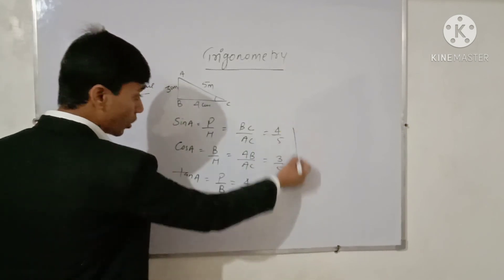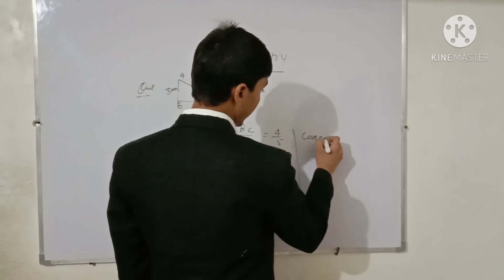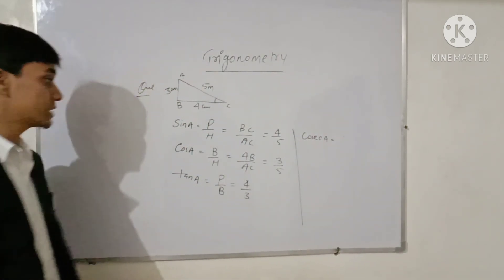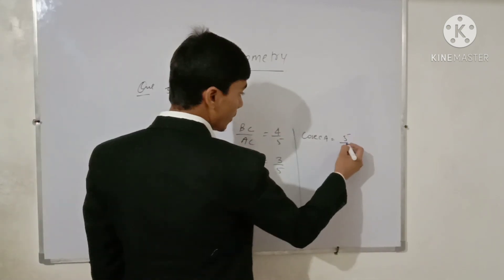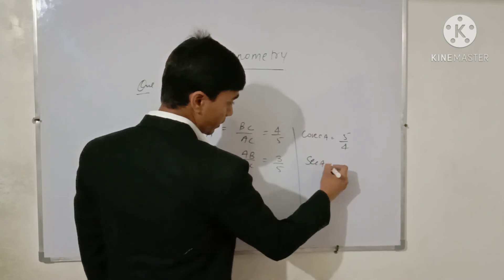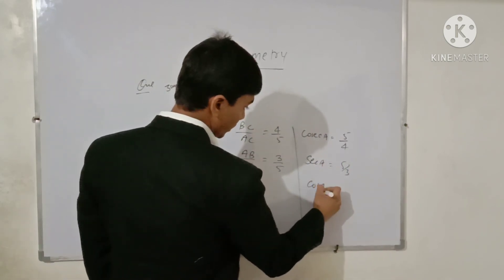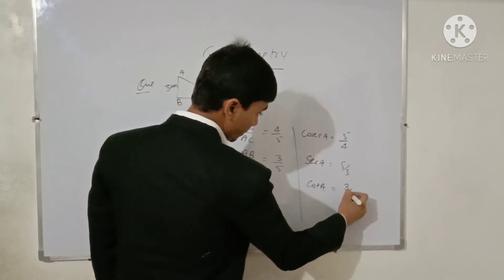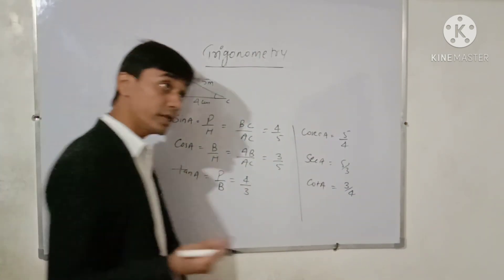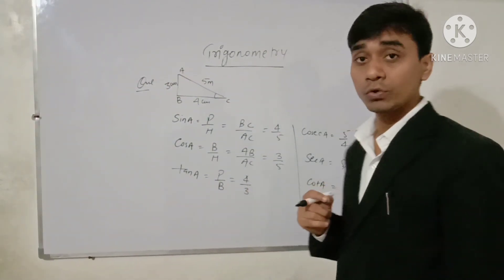For the reciprocal ratios: cosec A equals 5 by 4, sec A equals 5 by 3, and cot A equals 3 by 4. These are the six Trigonometric ratios calculated from a triangle when we are given two of its sides.